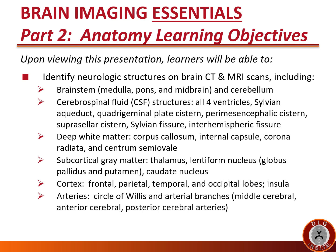And finally, learners will identify arteries in the brain: the circle of Willis and arterial branches, including the middle cerebral artery, the anterior cerebral artery, and the posterior cerebral artery.